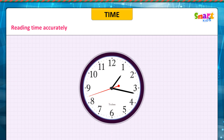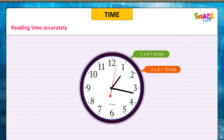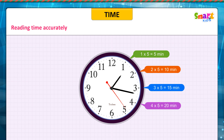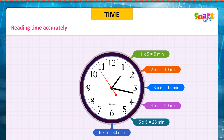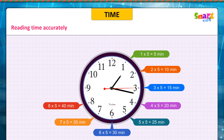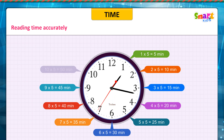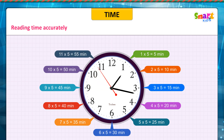Look at the clock. 1 into 5 is equal to 5 minutes. 2 into 5 is equal to 10 minutes. 3 into 5 is equal to 15 minutes. 4 into 5 is equal to 20 minutes. 5 into 5 is equal to 25 minutes. 6 into 5 is equal to 30 minutes. 7 into 5 is equal to 35 minutes. 8 into 5 is equal to 40 minutes. 9 into 5 is equal to 45 minutes. 10 into 5 is equal to 50 minutes. 11 into 5 is equal to 55 minutes. 12 × 5 is equal to 60 minutes.